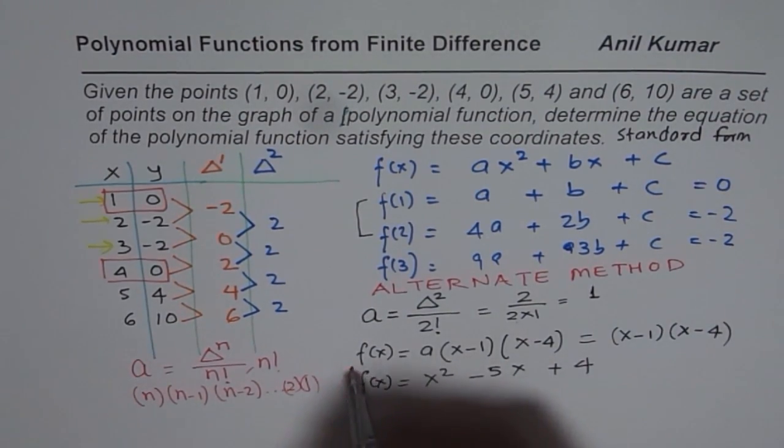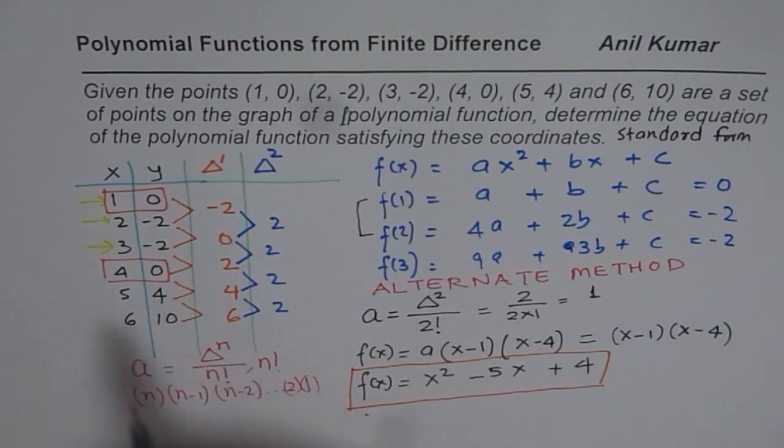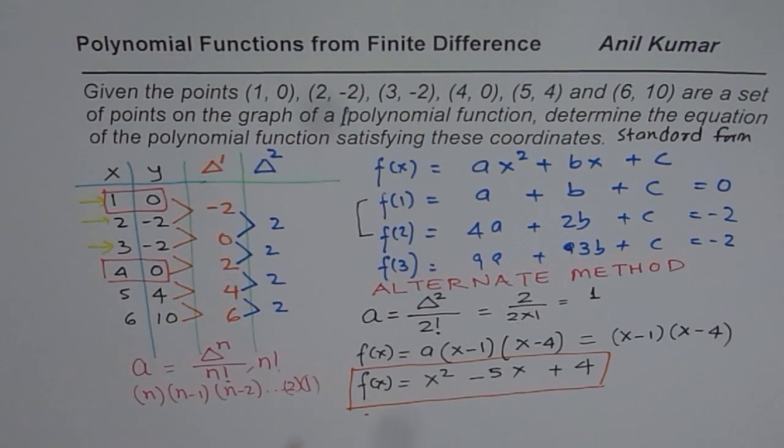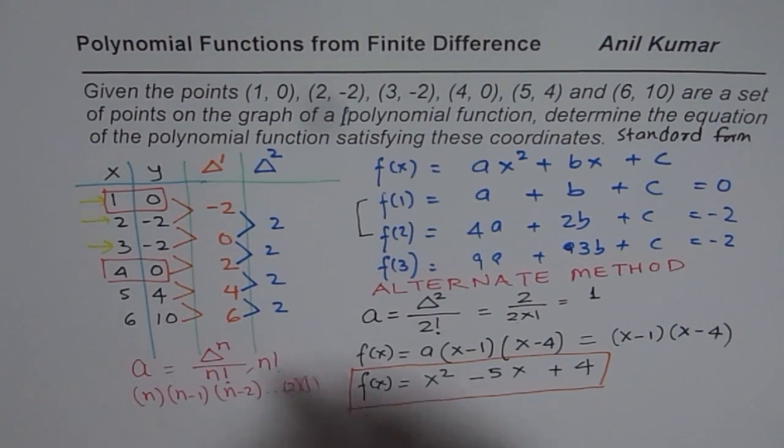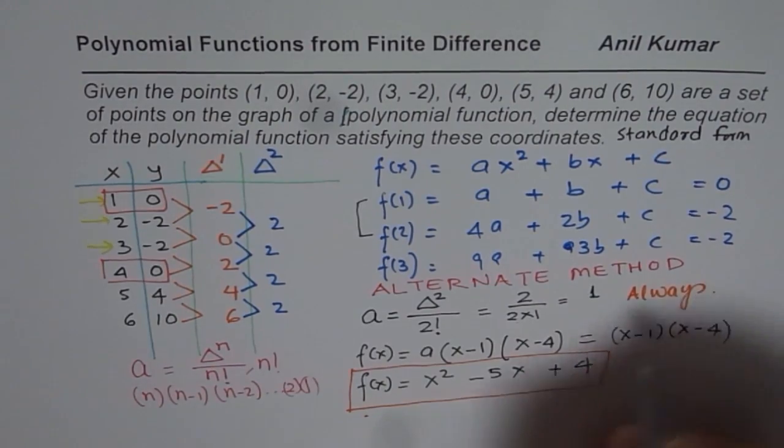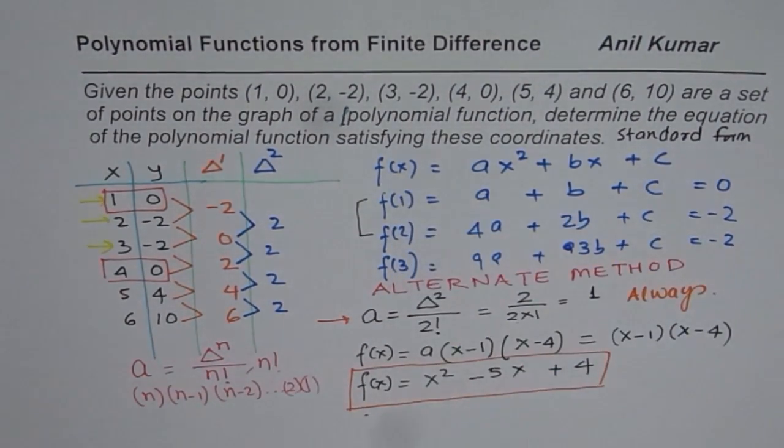If you have to check whether this is the right answer or not, you can check using any other point. For example, plug in 5 and see whether you get 4 or not. Plug in 6, check if you get 10 or not. But anyway, I hope you understand and appreciate that we could always, always, always use the first step to reduce number of equations by 1. That is always.